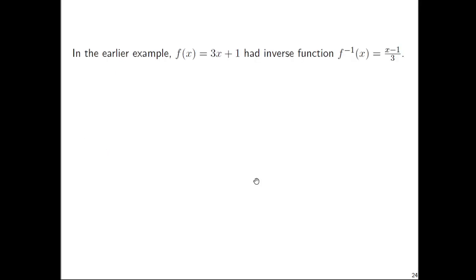Now in the earlier example we saw, we had the given function f(x) = 3x + 1, and the inverse function that we computed was f^(-1)(x) = (x - 1)/3. Now let's just try composing these. So f(f^(-1)(x)). First, replace the f^(-1) in the middle with (x - 1)/3. So we have f((x - 1)/3).